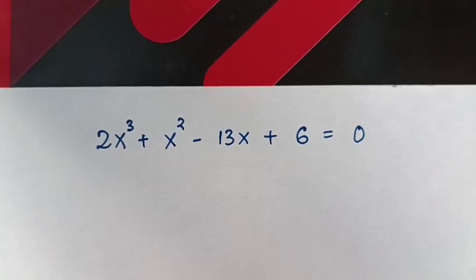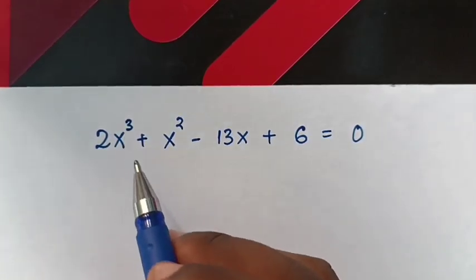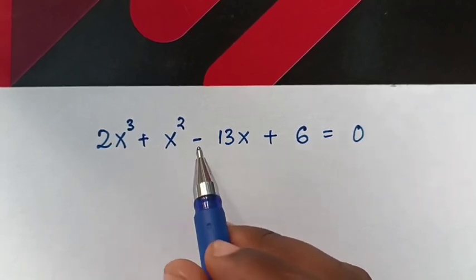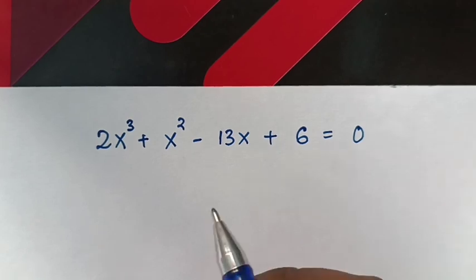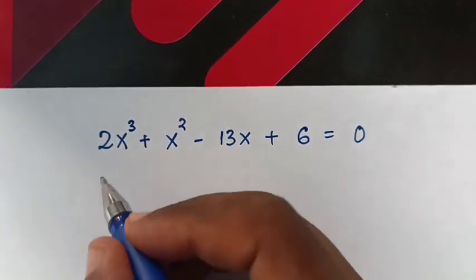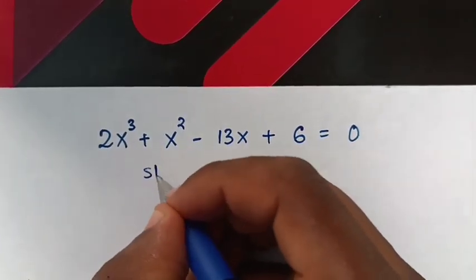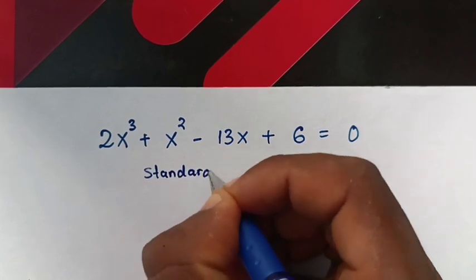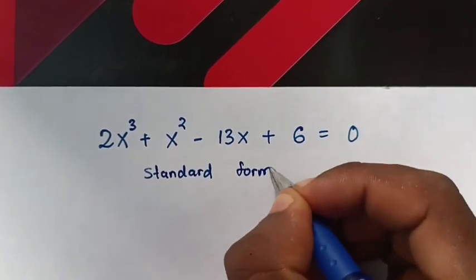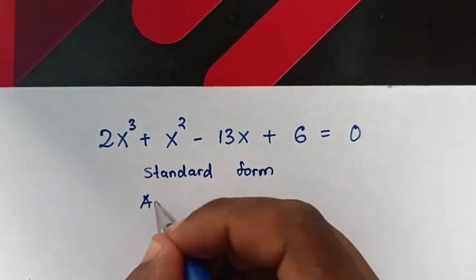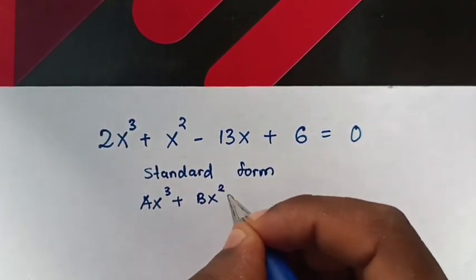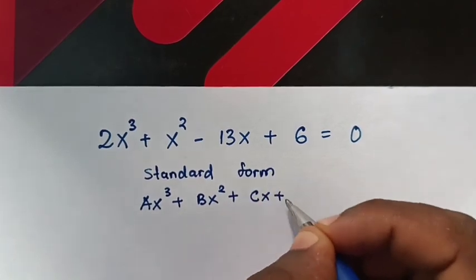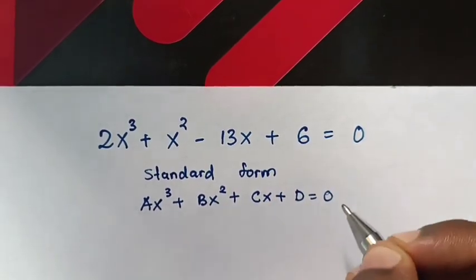Hello, how to solve this cubic equation: 2x cubed plus x squared minus 13x plus 6 is equals to 0. To find the values of x in this equation of standard form ax cubed plus bx squared plus cx plus d is equals to 0.